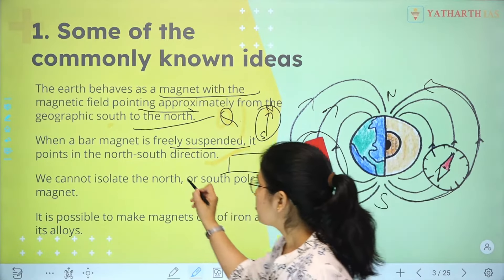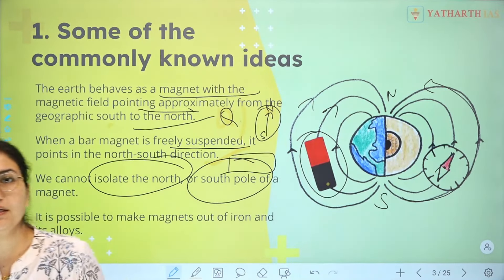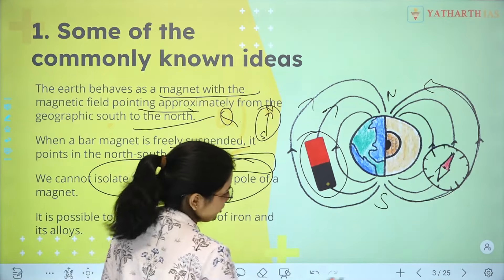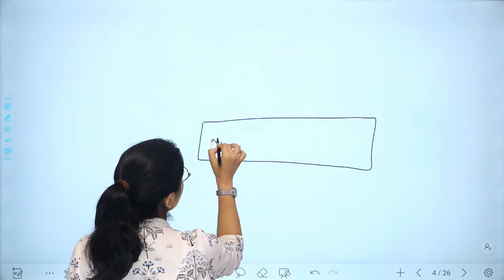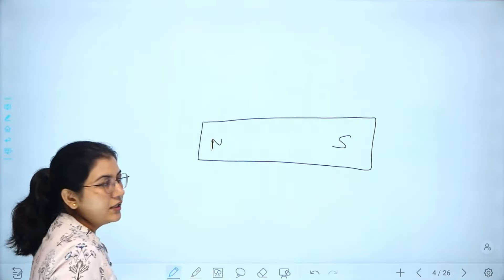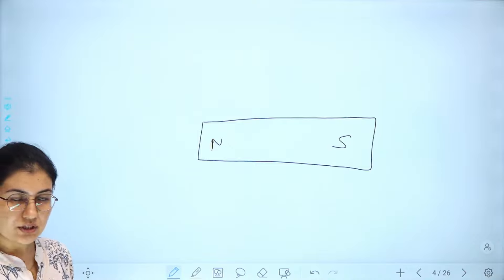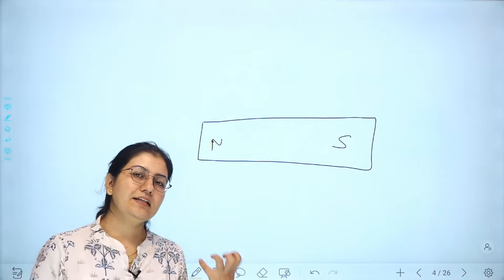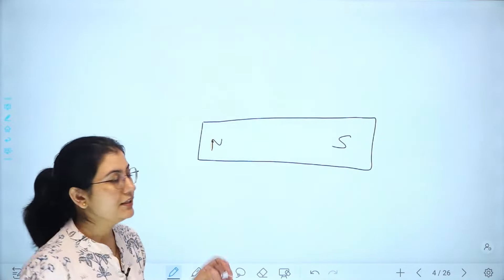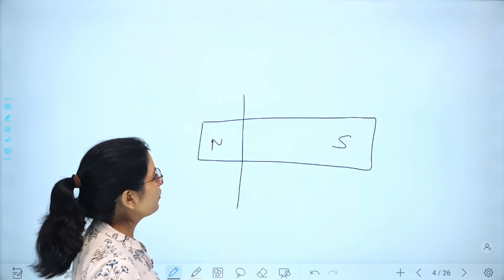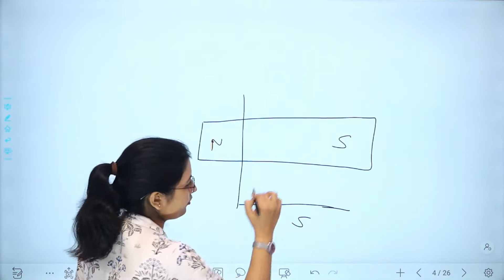We cannot isolate the north and south pole of a magnet. This is a very important and unique feature of magnets. If you have a bar magnet with a north pole and a south pole, and you try to cut the north pole end off, you will not be left with an isolated north pole.